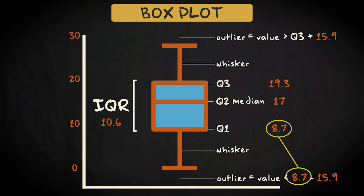Q1 is 8.7, so all values lower than 8.7 minus 15.9 equals minus 7.2 are outliers. Such values don't exist, so we have no outliers on this side. Our minimum value is 0. That's the end of the whisker.